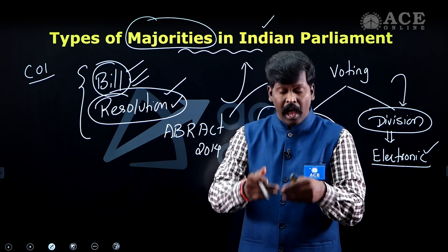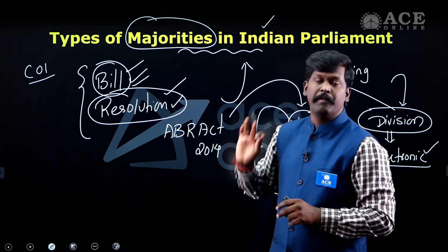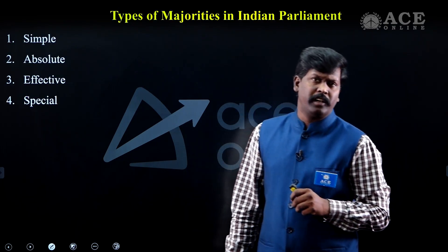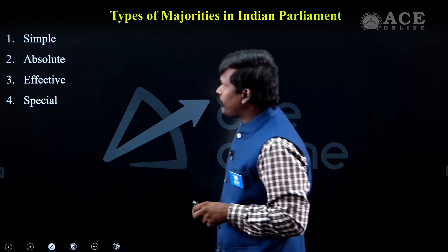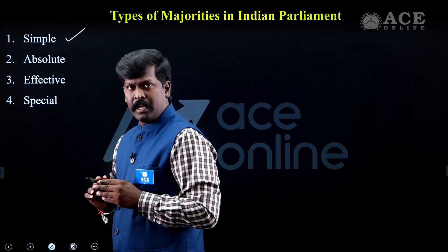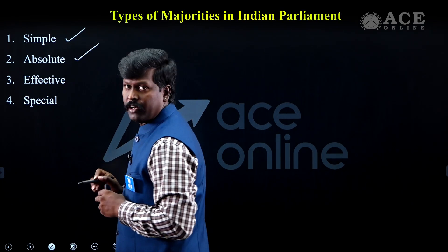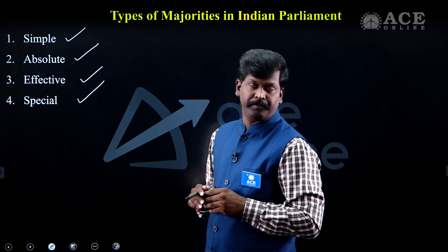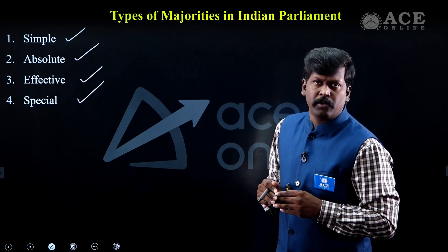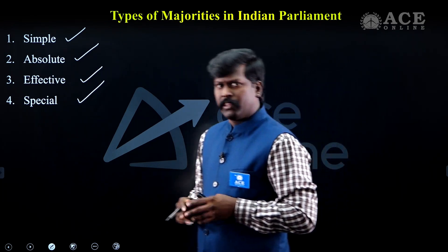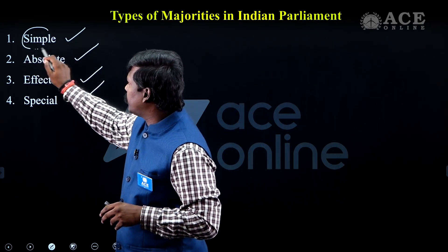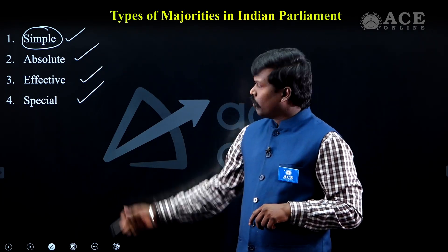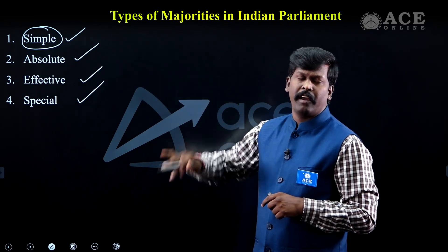In general, as per the Constitution, there are four types of majorities. The first type is called Simple Majority. The second type is called Absolute Majority. The third is Effective Majority, and the fourth is Special Majority.